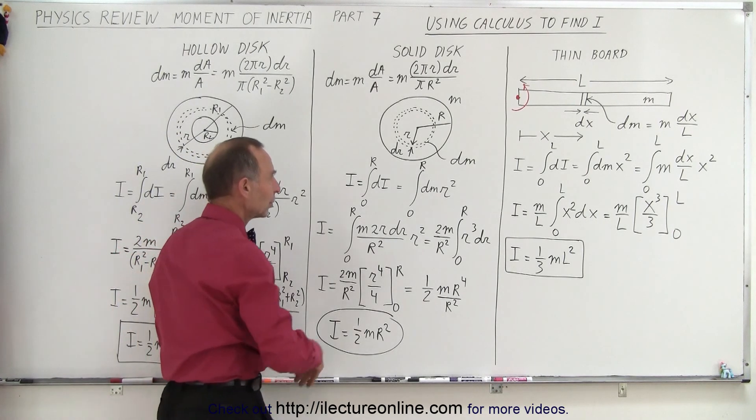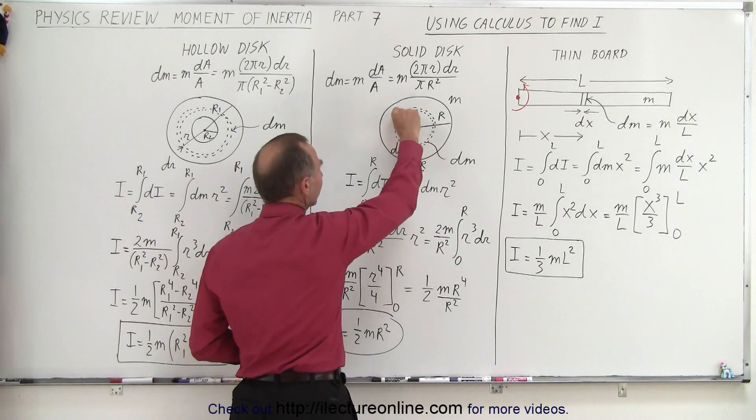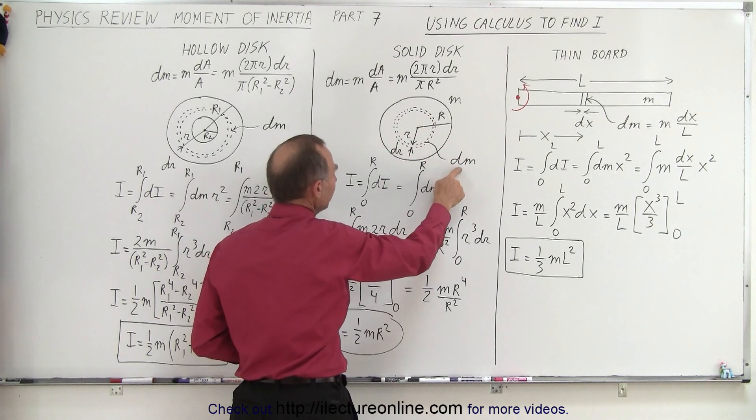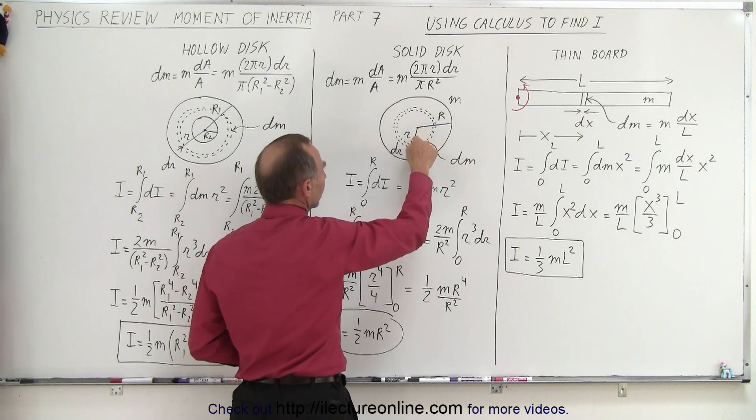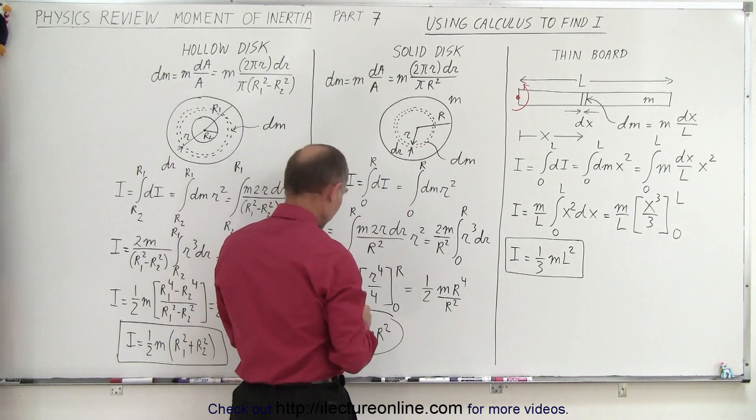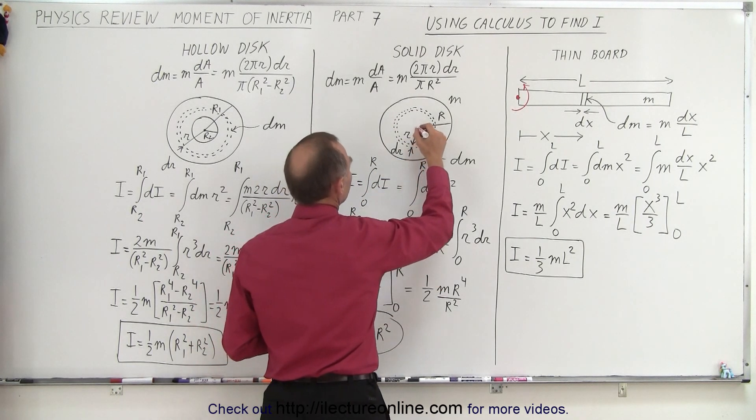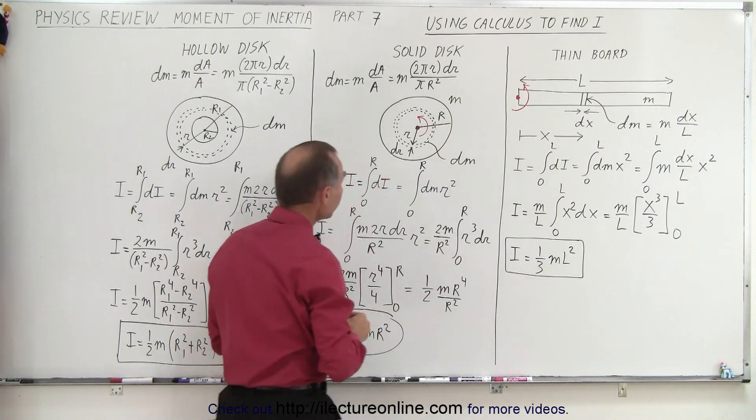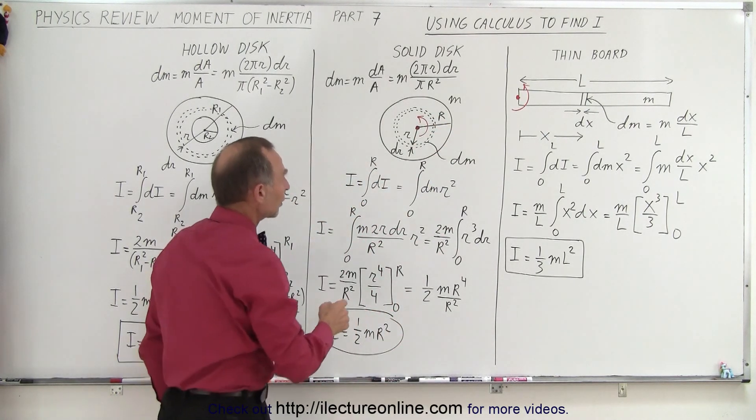If we now take a solid disk, we do the same principle. We take a small little segment in the shape of a little ring, and so we have a small amount of mass, dm. The ring is at a distance small r from the center of rotation. Again, assuming that we're going to rotate about the center mass like this.